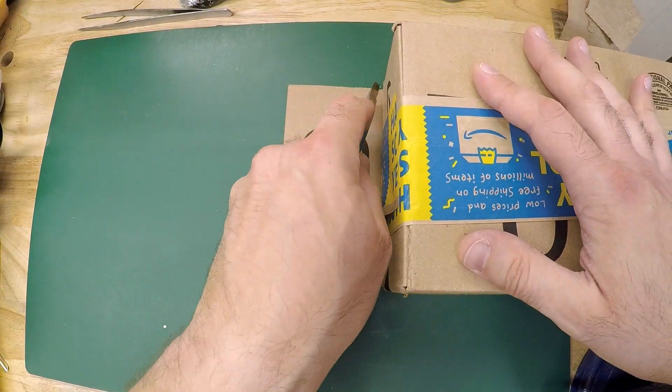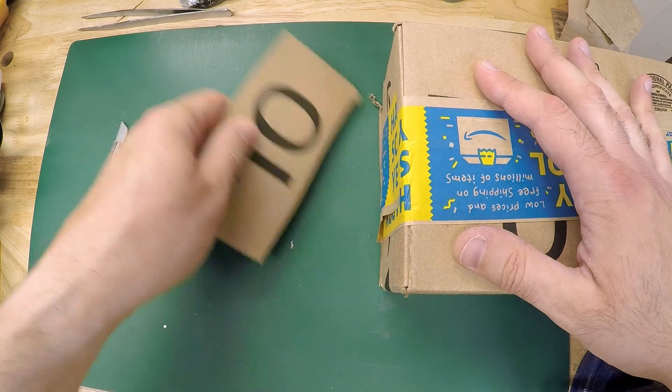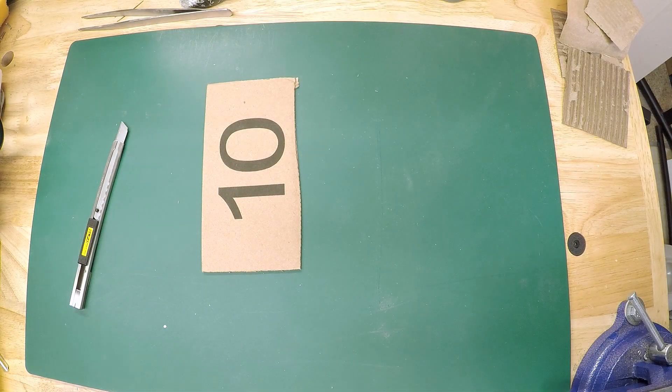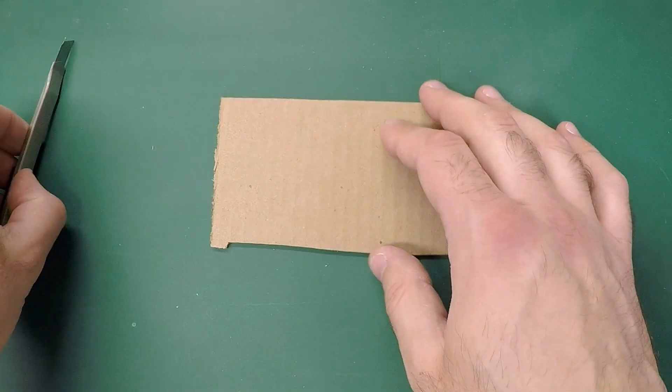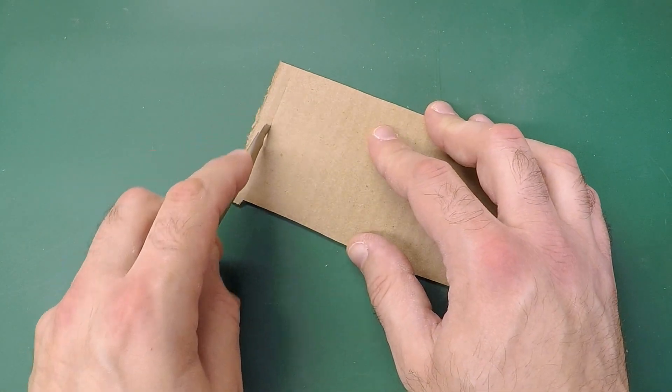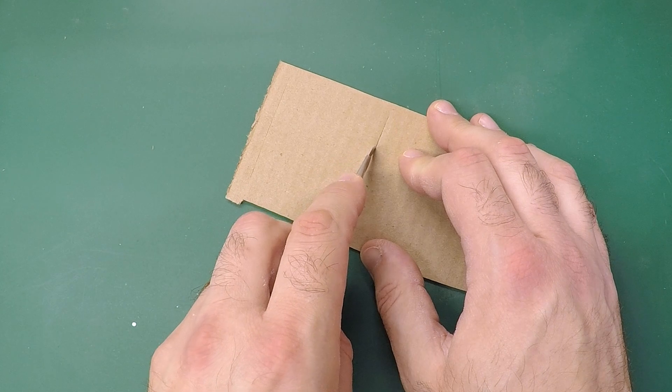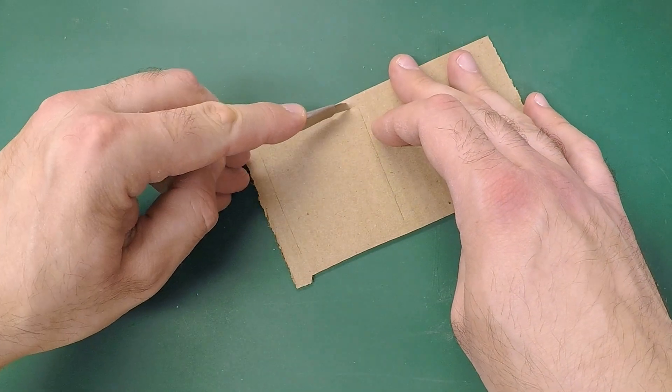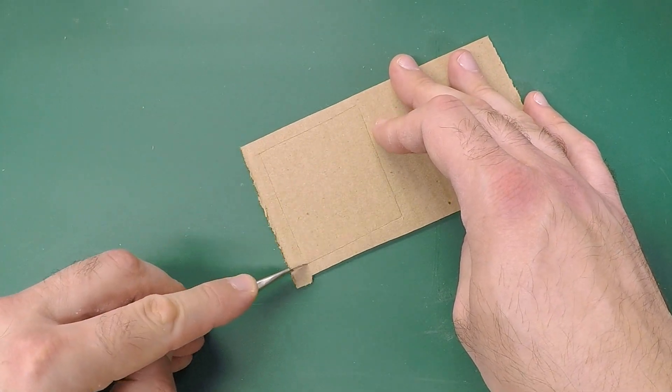So I've just got a regular cardboard box that I got a package in. I'm just going to take off the flap using a utility knife. You can use a hobby knife, anything like that. And I'm just going through the top layer here. I don't want to go through both layers of the cardboard down through the bottom. I'm just getting the top.